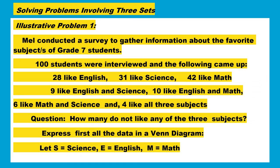I have here illustrative problem number one. Mel conducted a survey to gather information about the favorite subjects of grade 7 students. 100 students were interviewed and the following came up: 28 like English, 31 like Science, 42 like Math, 9 like English and Science, 10 like English and Math, 6 like Math and Science, and 4 like all three subjects. The question is: how many do not like any of the three subjects?